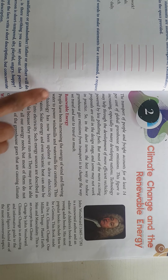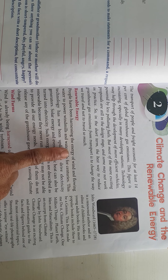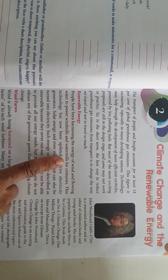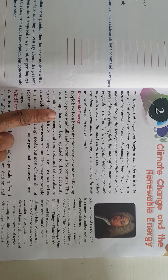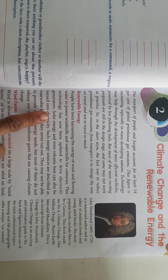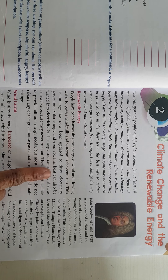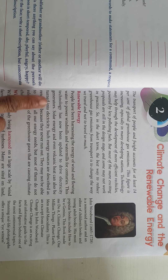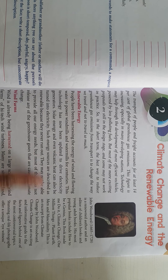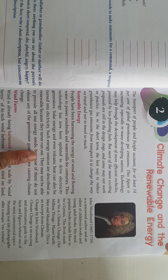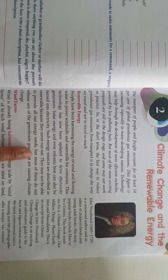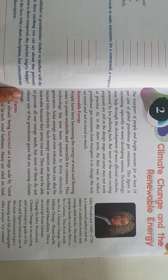People have been harnessing the energy of wind and flowing water to power windmills and watermills for centuries. This technology has now been updated to drive electricity generators. Solar energy and even volcanic heat can also be turned into electricity. Such energy sources are described as renewable because they never run out. They may not be able to provide all our energy needs but most of them do not release any of the greenhouse gases that are causing climate change.